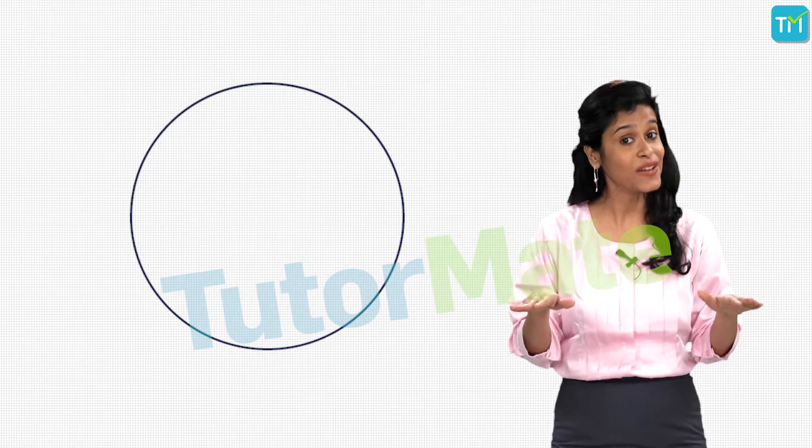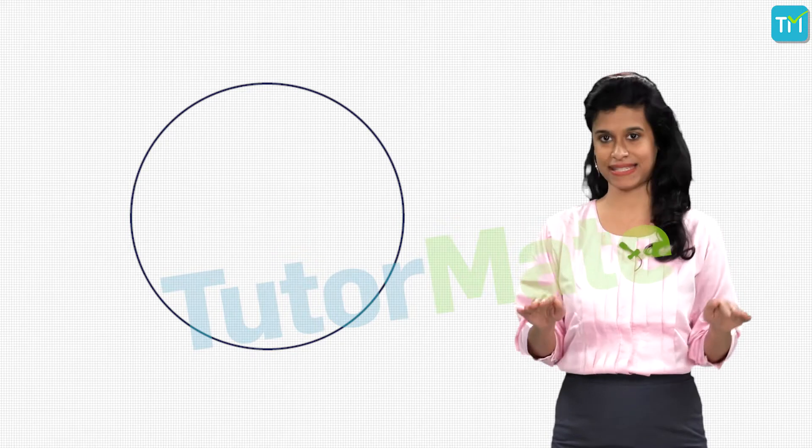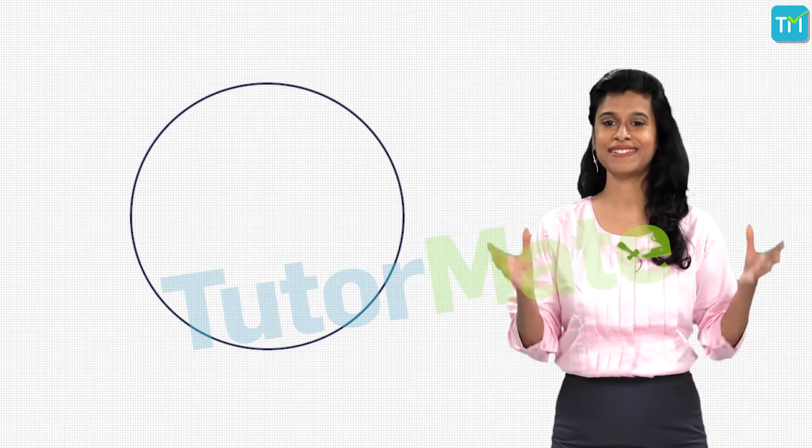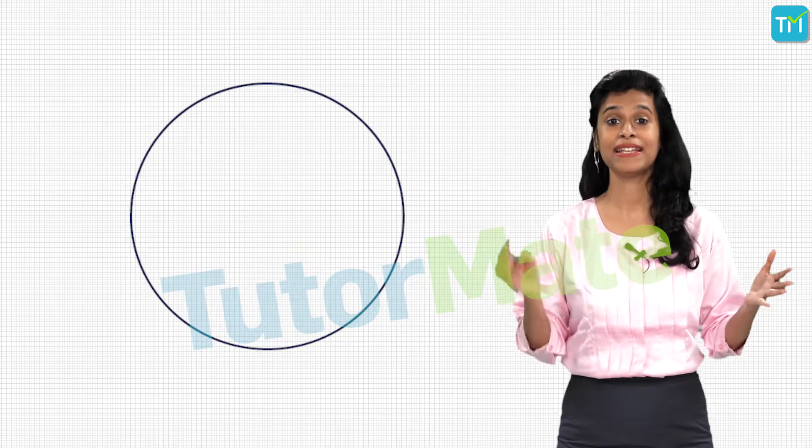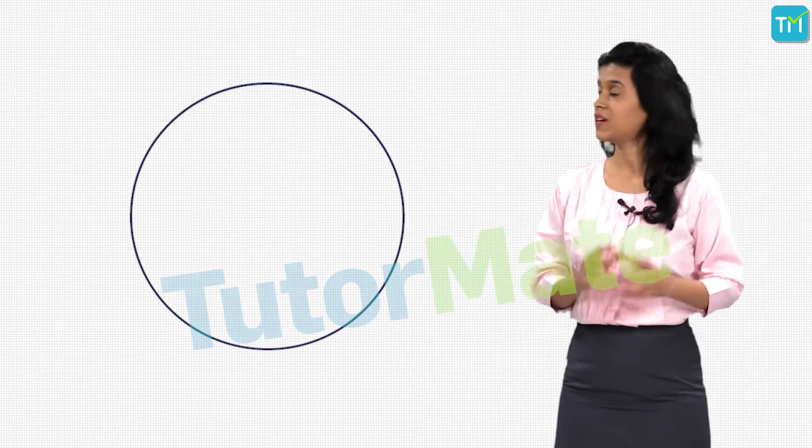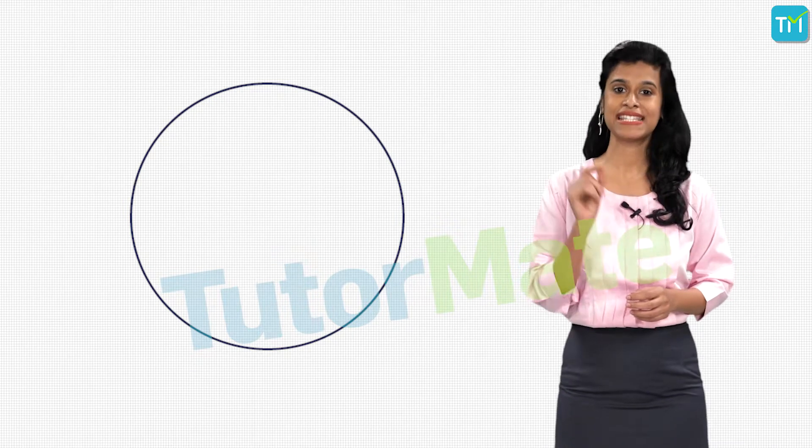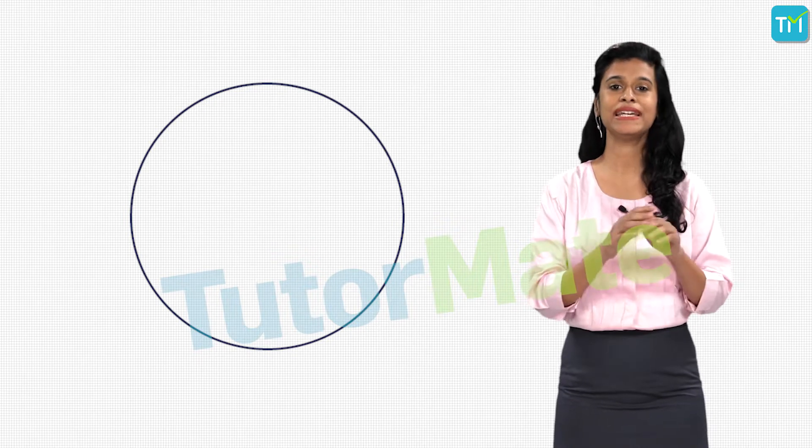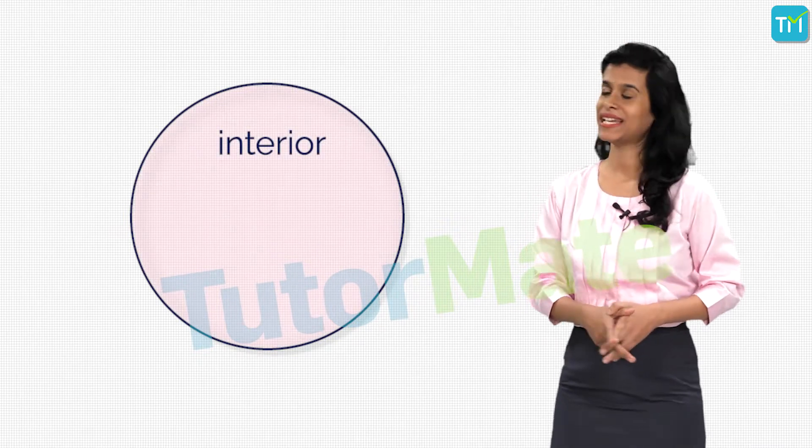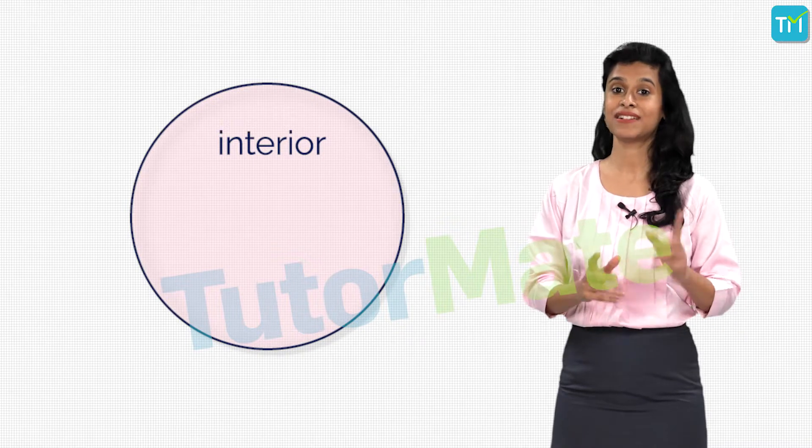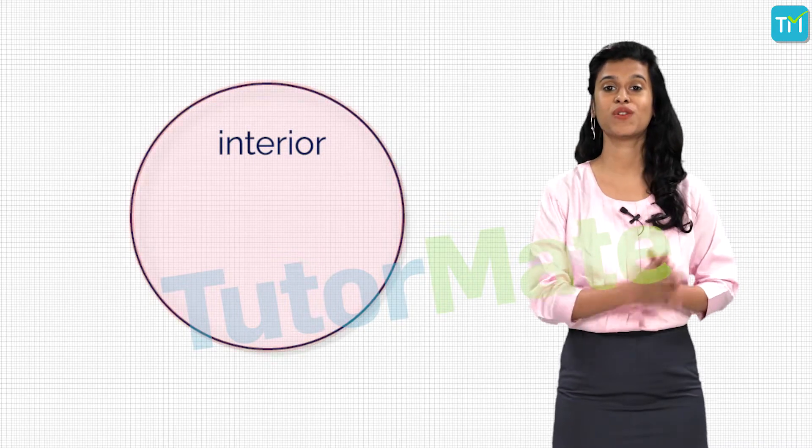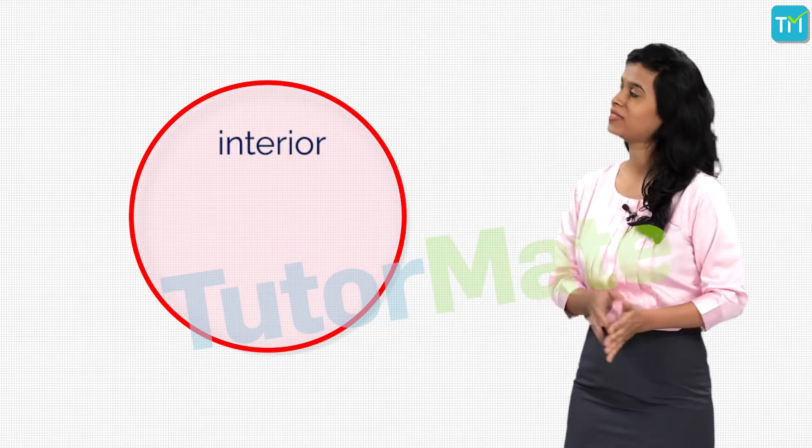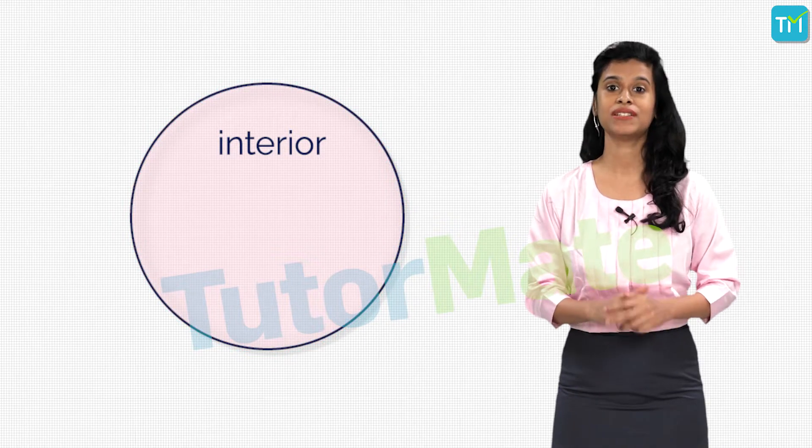And so the circle divides this plane in three parts. The first part is the area inside the circle which is called the interior of the circle. The second is the circle itself which consists of all the points that are on the circle. And the third is the region that is outside the circle, which is called the exterior of the circle.